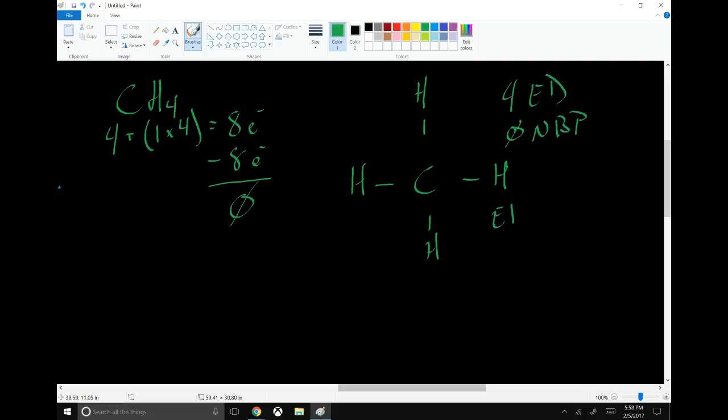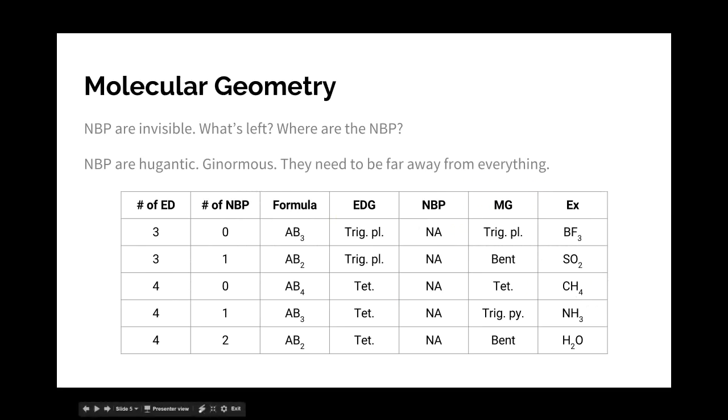We have 4 electron domains and 0 non-bonding pairs. So our electron domain geometry is tetrahedral. And our molecular geometry is identical. So it's just that guy right there. Bond angles, 109.5 degrees.